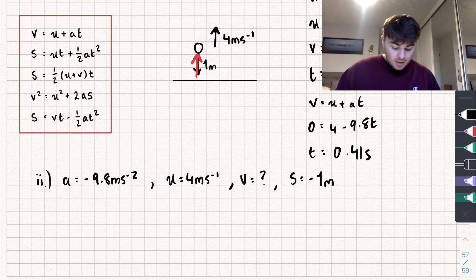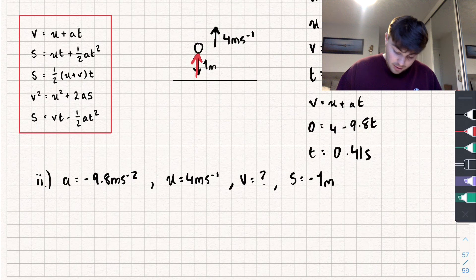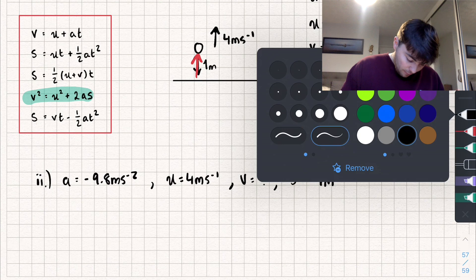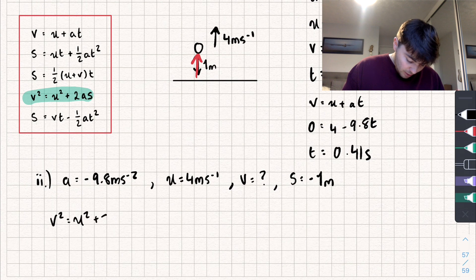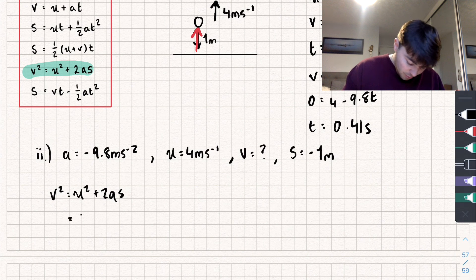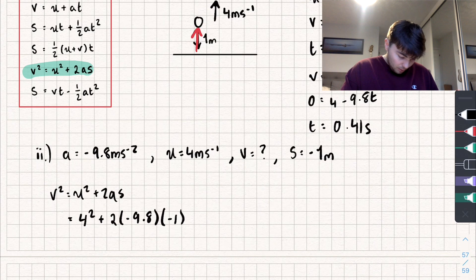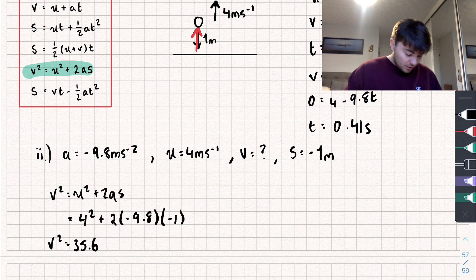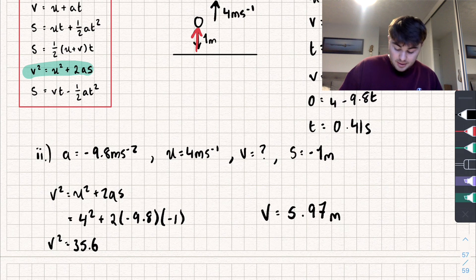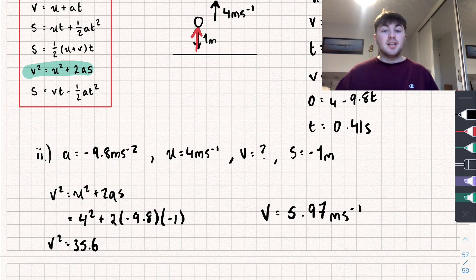We need a SUVAT equation with a, u, v, and s — no t. We use v² = u² + 2as. Substituting: v² = 4² + 2 × (−9.8) × (−1) = 16 + 19.6 = 35.6. Taking the square root gives v = 5.97 meters per second to two decimal places.